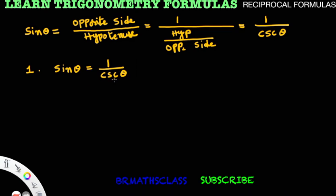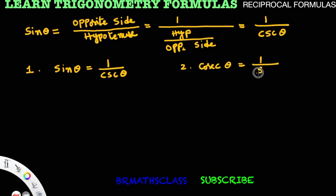From this, we can also derive the second formula. If you cross multiply — taking cosecant theta to one side and sin theta to the other — cosecant theta is equal to 1 divided by sin theta. So out of 6 formulas, we have learned 2: sin theta equals 1 by cosecant theta, and cosecant theta equals 1 by sin theta.